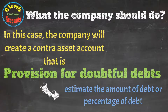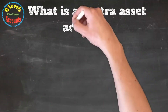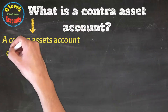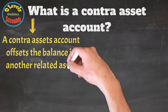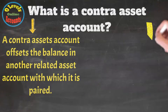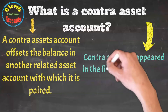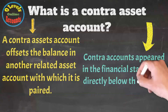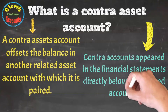Before moving forward, let's see what a contra asset account is. A contra asset account offsets the balance in another related asset account with which it is paired. In this case, provision for doubtful debts is the contra asset account, which is paired with debtors. Since it is an estimate, the company will not disturb the debtor account itself — it will create a contra asset as per accounting conventions. Contra asset accounts also appear in the balance sheet directly below their paired accounts.